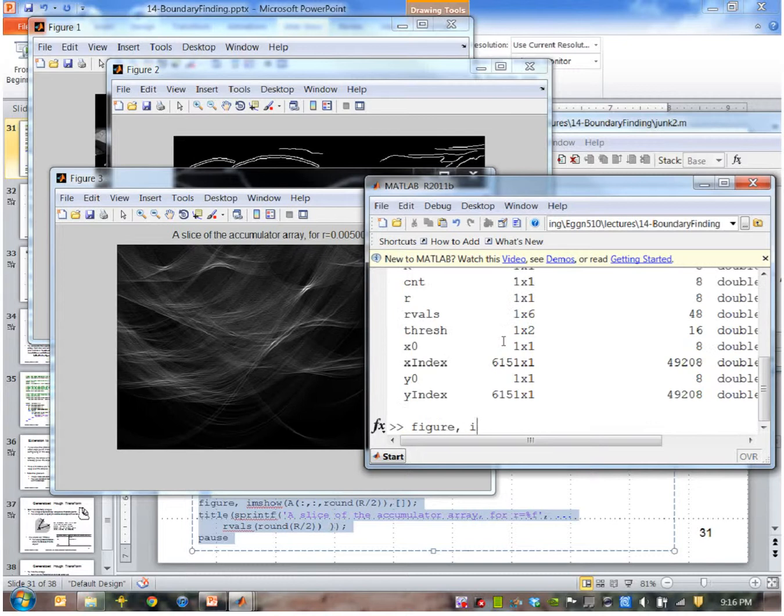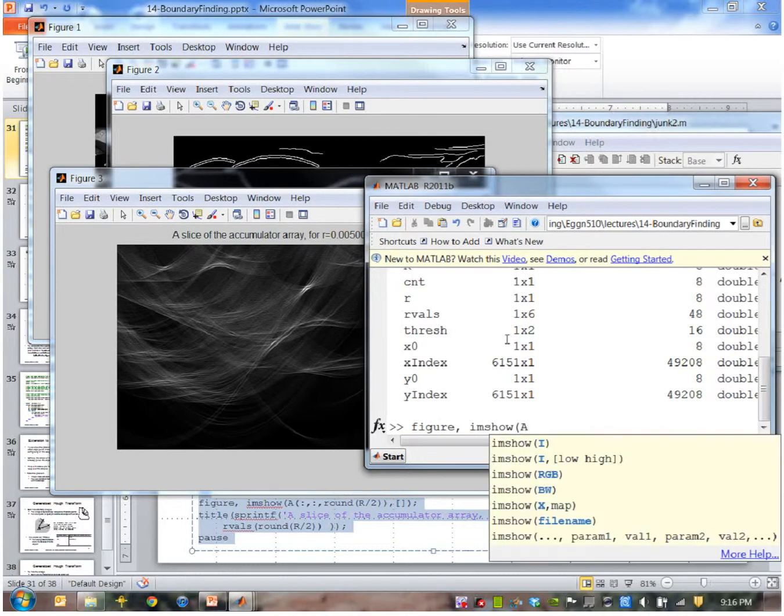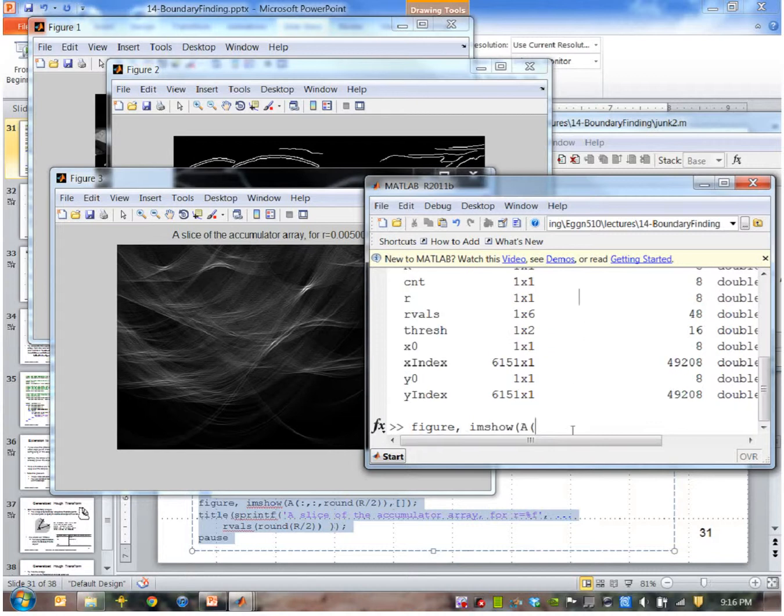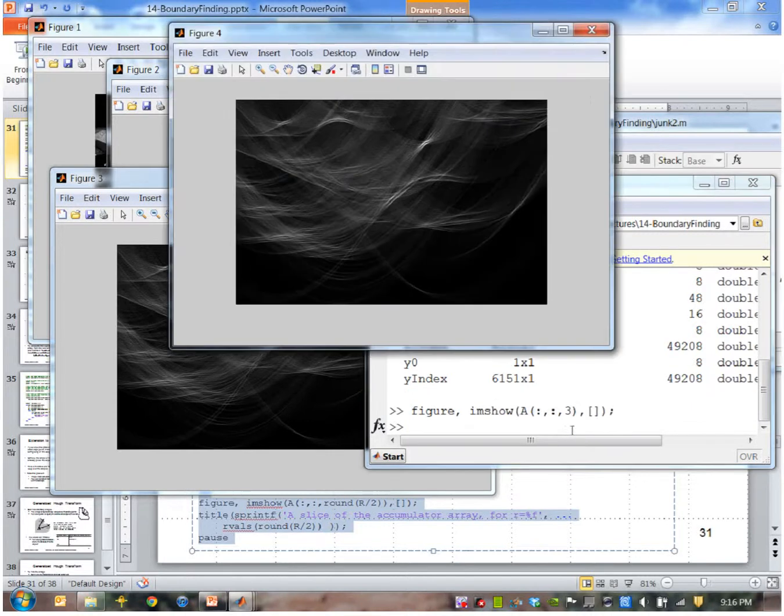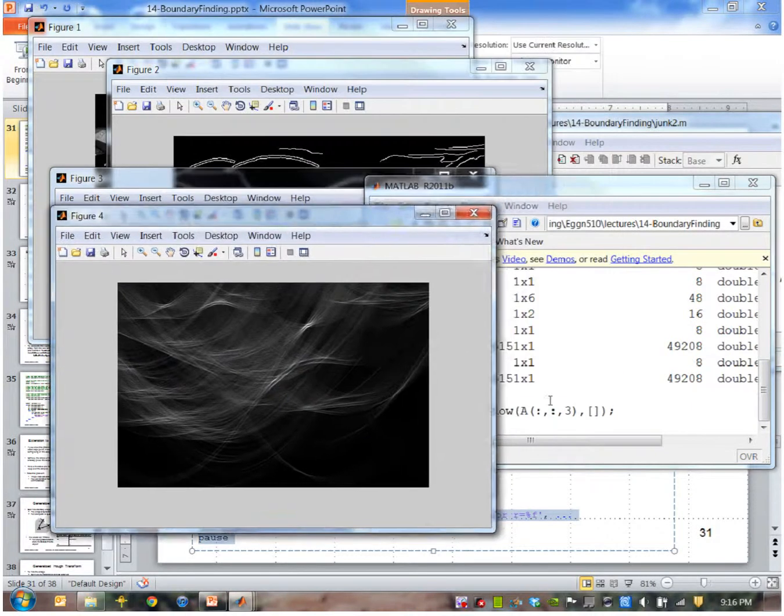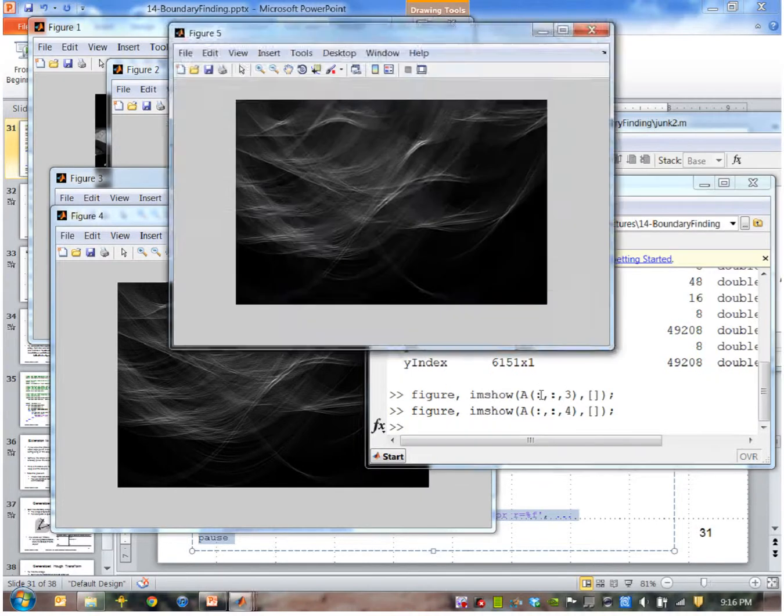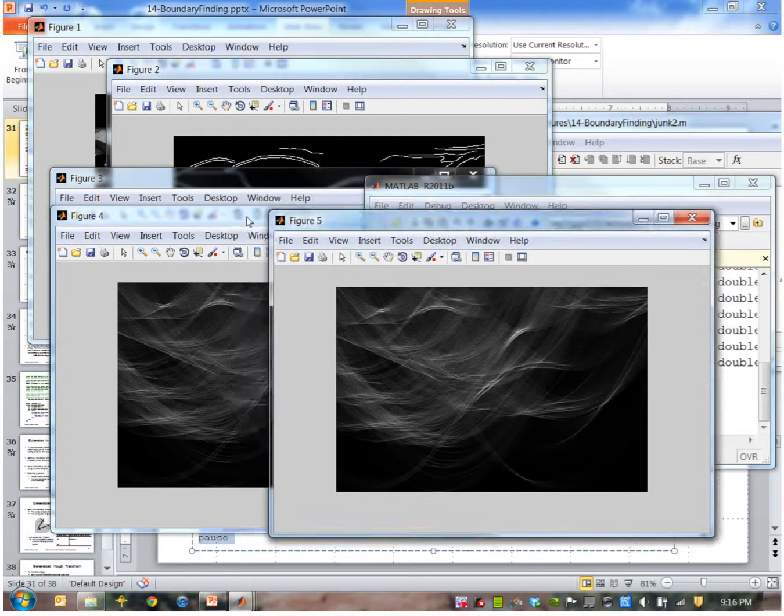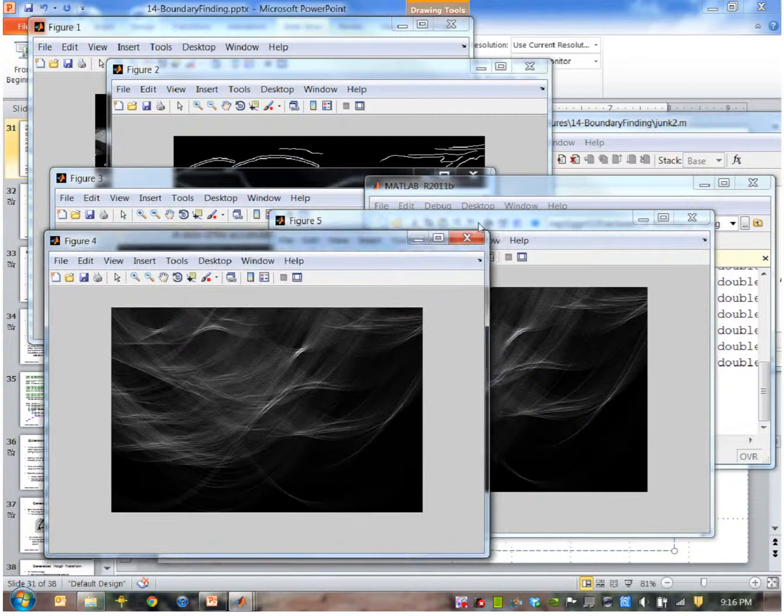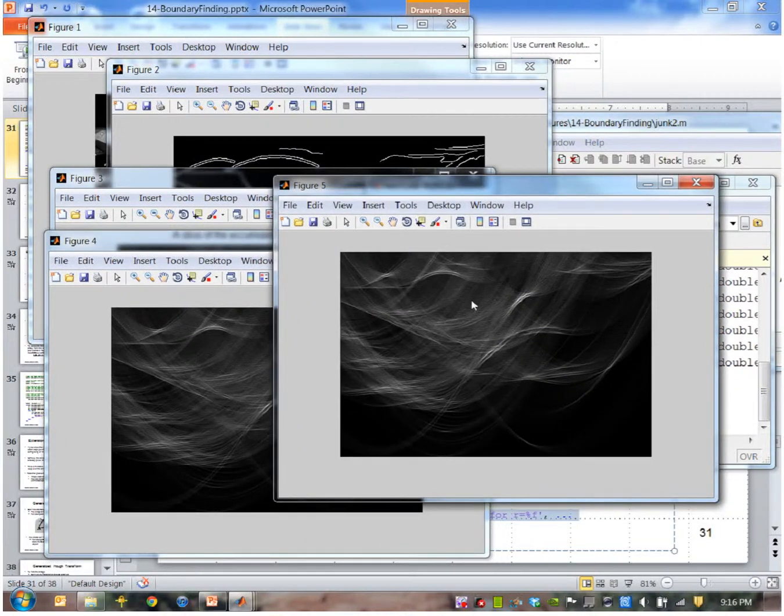So for example, if I show what A of, uh, the second, or say the third slice. Okay, it looks like that. Let's say this is the fourth slice. And so forth. So they look similar, but again, these are stacked up on top of one another, so we have to find peaks in this three dimensional array.